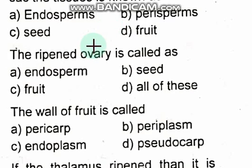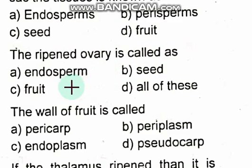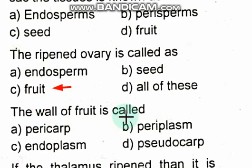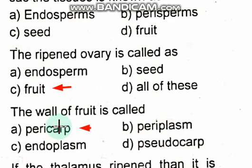The ripened ovary is called a fruit. The wall of the fruit is called the pericarp — this is very important. Pericarp is the wall of the fruit.